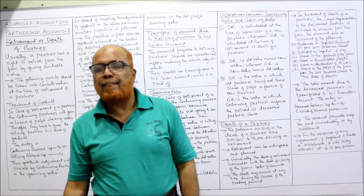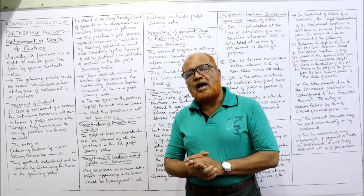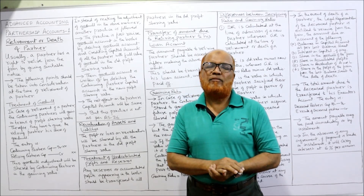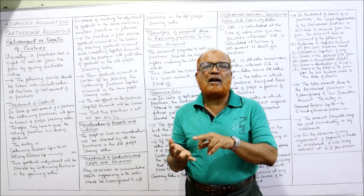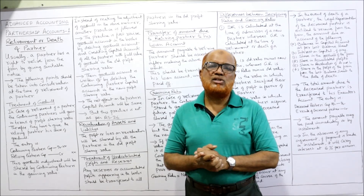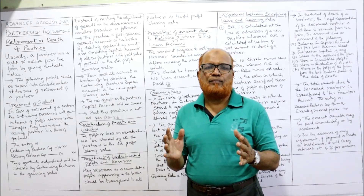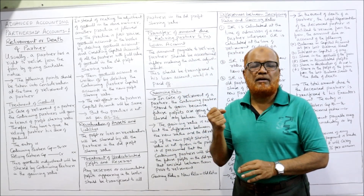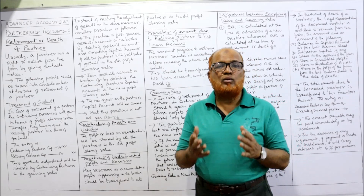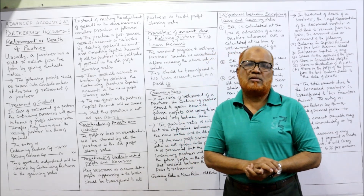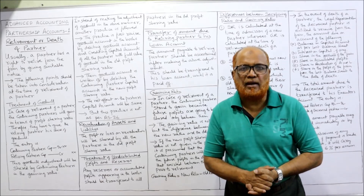These are the provisions regarding retirement and death of a partner. In four videos I have completed all the theoretical aspects of Partnership Accounts, covering partnership capital accounts, admission of a partner, retirement of a partner, and death of a partner. From the next video onwards we will start the problems on these partnership accounts. Remember, the problems are based on theory, so watch all the theory videos first. In examination you may get theory questions also, so you should be perfect on theory concepts.